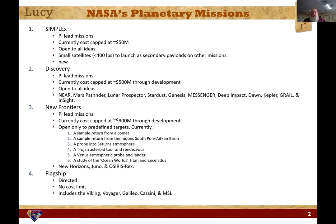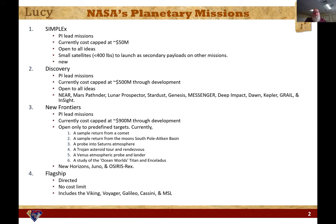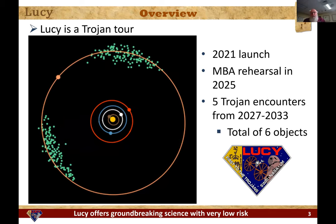Discovery missions are open to all ideas. Then there's New Frontiers, which is a little less than a billion dollars — it's PI-led but NASA decides the kind of science. New Horizons, Juno, and OSIRIS-REx are all part of New Frontiers. Then there are the big flagship missions directed by NASA, like the Europa mission, Viking, and Voyager — no cost limit and no PI, with science driven by NASA headquarters.